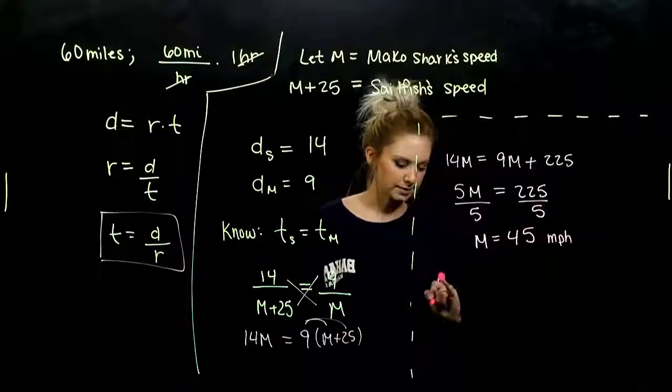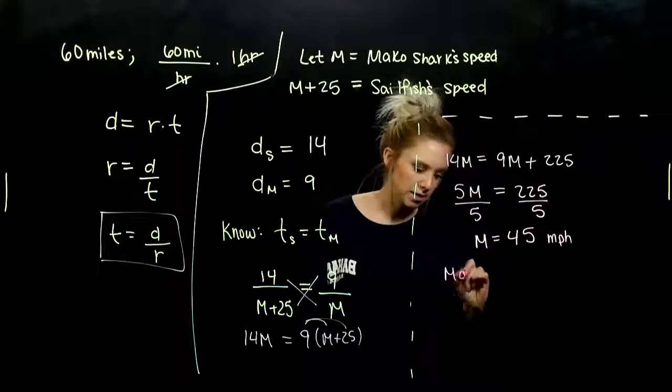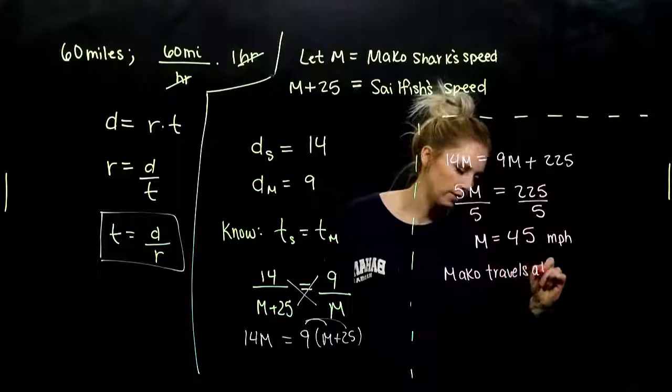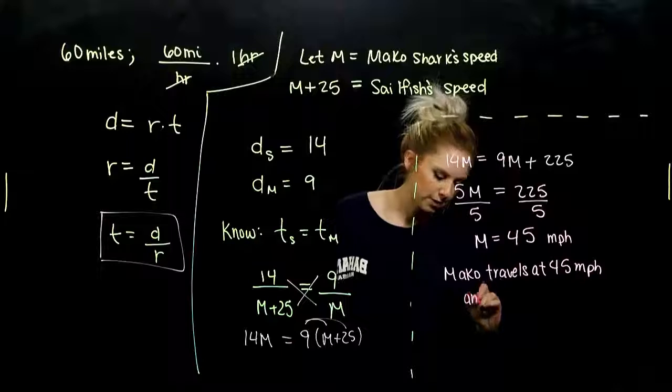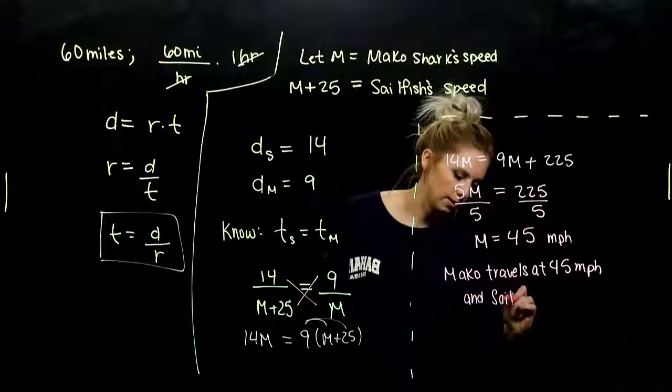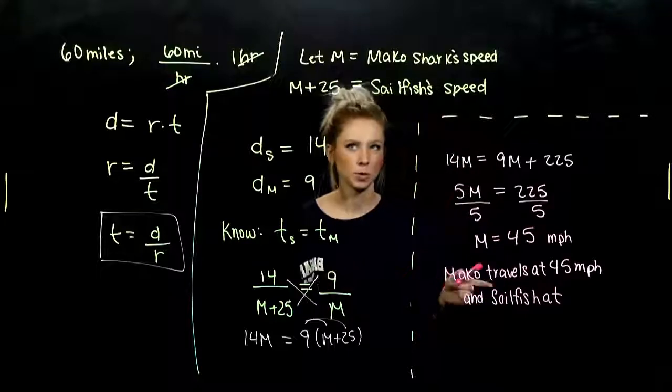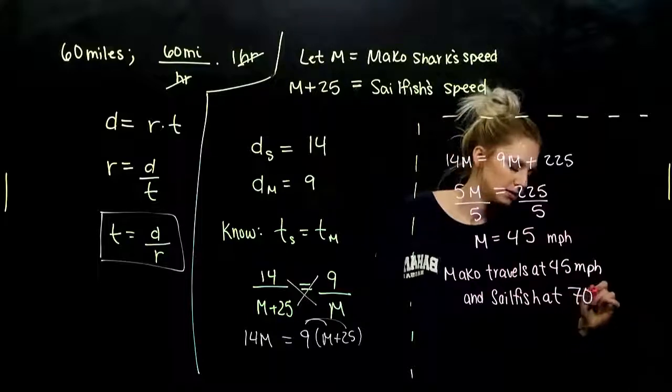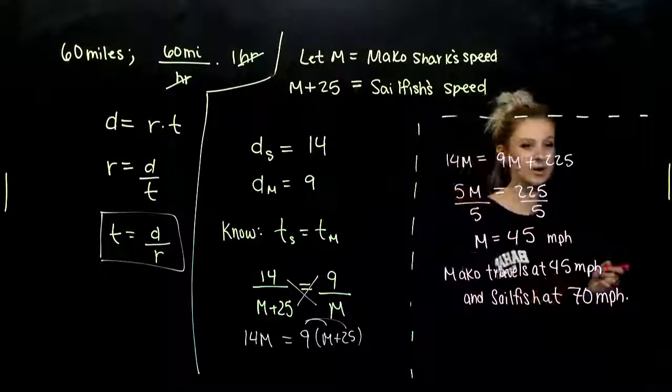And we always want to write a sentence to sum up any kind of application problem. So the mako travels at 45 miles per hour. And the sailfish at what? How many miles per hour? 25 more than the mako. So we're looking at 70. 70 miles per hour. That is outrageous.